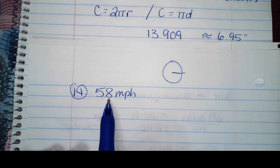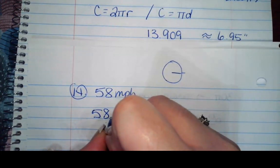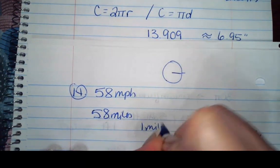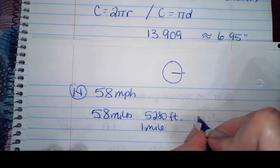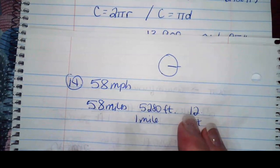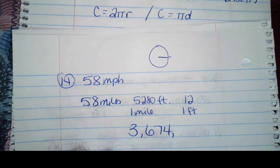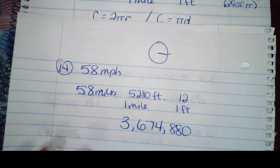So the first thing that we want to do is convert this because we've got 13 inches. So I want to take 58 times how many inches do we have? So if this is 58 miles, then we have one mile is 5,280 feet and then one foot is 12 inches. So I'm going to take 58 times 5,280 times 12 and that's going to give me 3,674,880 inches is how many inches of the tire at one single point is traveling.